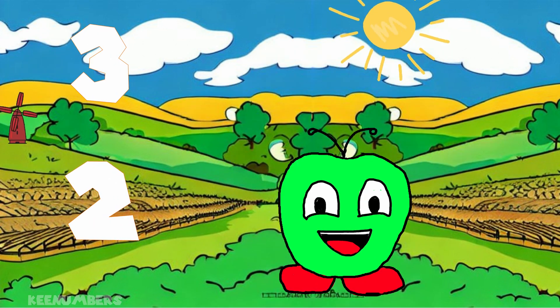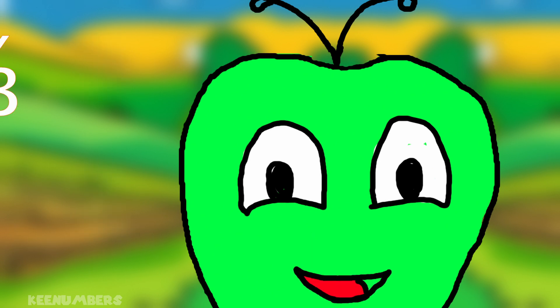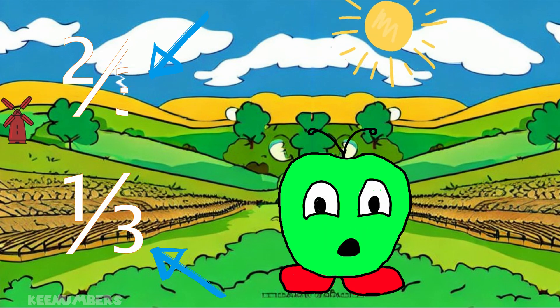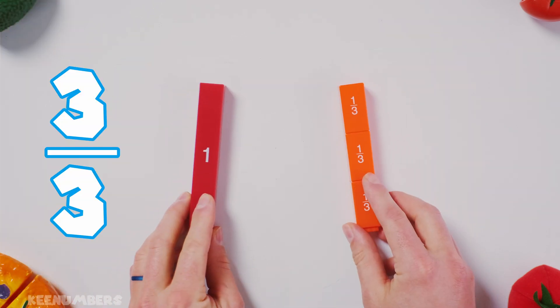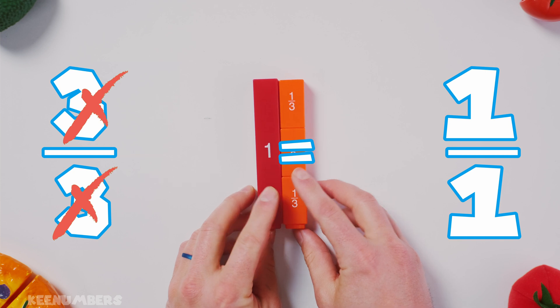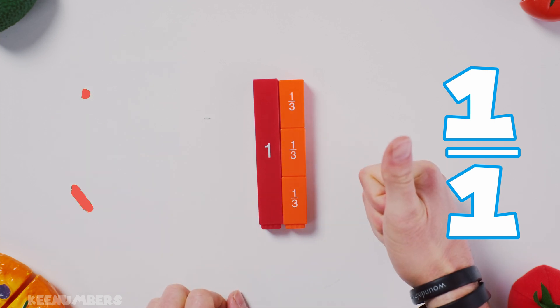Remember, kids, add or subtract whole numbers together and add or subtract fractions together when they have the same denominator. 2/3 of a banana plus 4/3 of a banana. Remember, whole numbers go together and the fractions go together, especially when the fractions have the same denominator. Now, 3/3 is equal to 1.